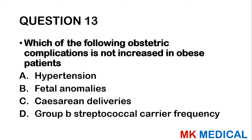Question 37: How many weeks does the embryonic period last? A — 4 weeks. B — 8 weeks. C — 10 weeks. D — 12 weeks. The answer is C — 10 weeks.